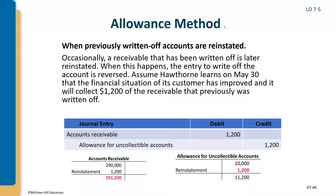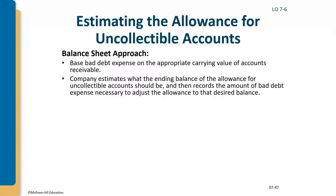If a receivable previously written off is later collected, we first reverse the write-off: debit accounts receivable for the amount and credit allowance for uncollectible accounts. Then record the cash coming in: debit cash, credit accounts receivable. We don't just refuse it — we reinstate it first, then record the collection.